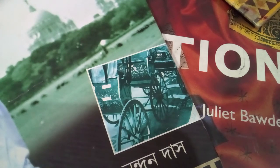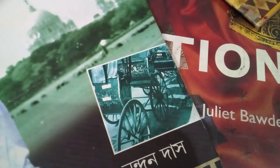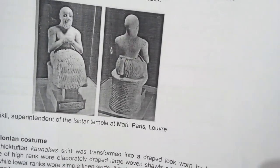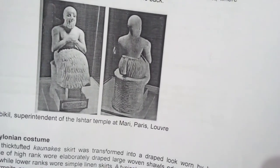Sumerian costume: the most basic garment for both men and women was the simple ankle-length wrap-around skirt. Sculpture of priests shows this. The Babylonian costume similarly transferred into the draped look worn by both sexes. You can check these pictures - flashback on the page of history - showing Sumerian costume.